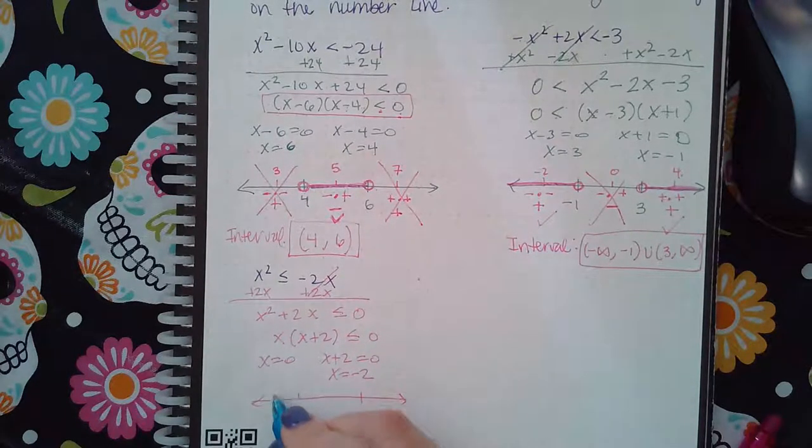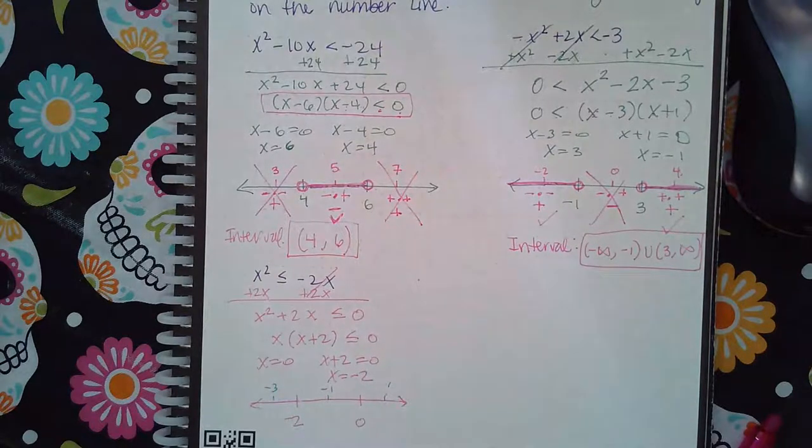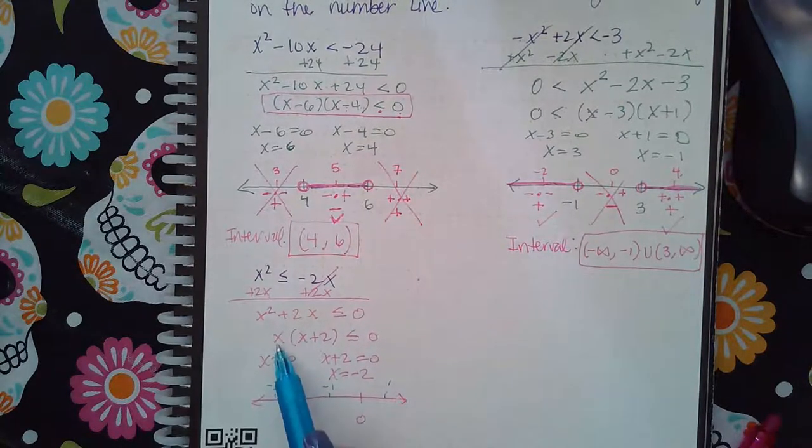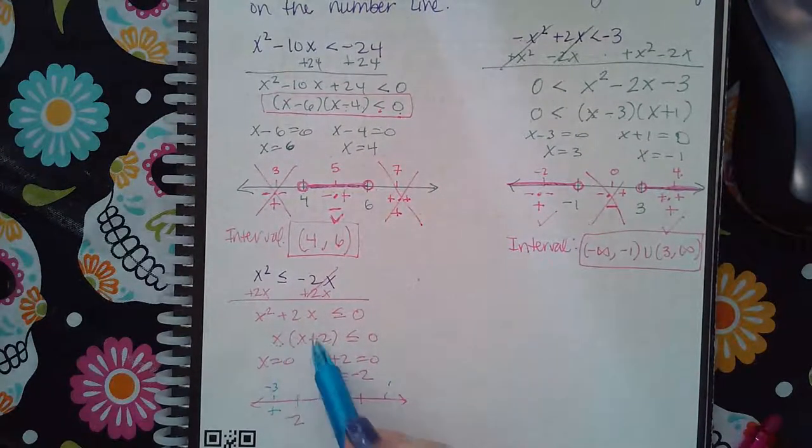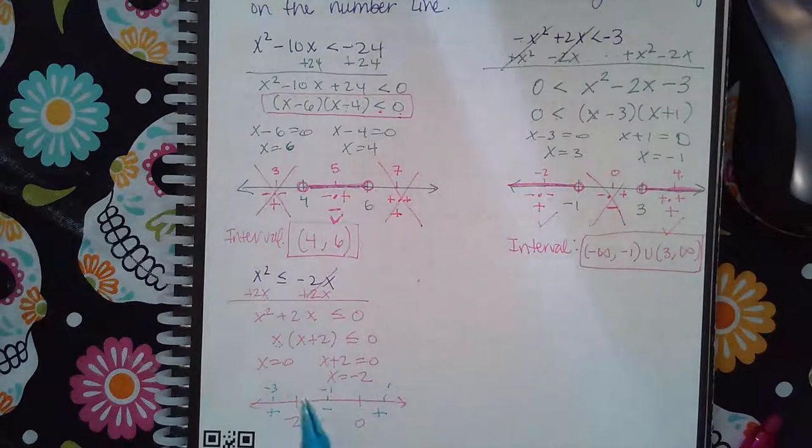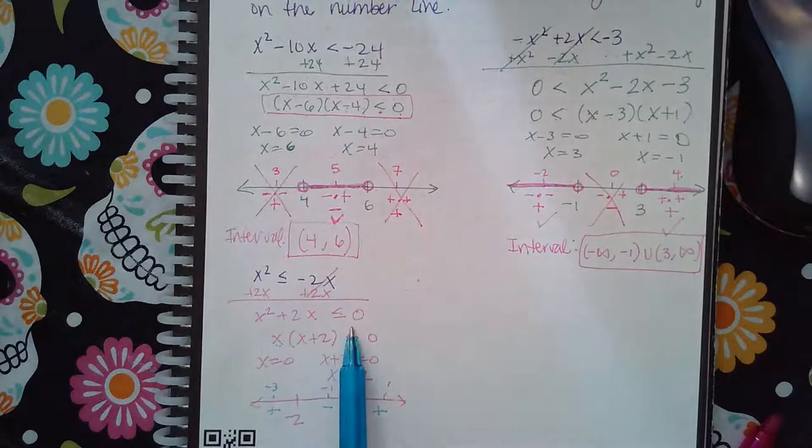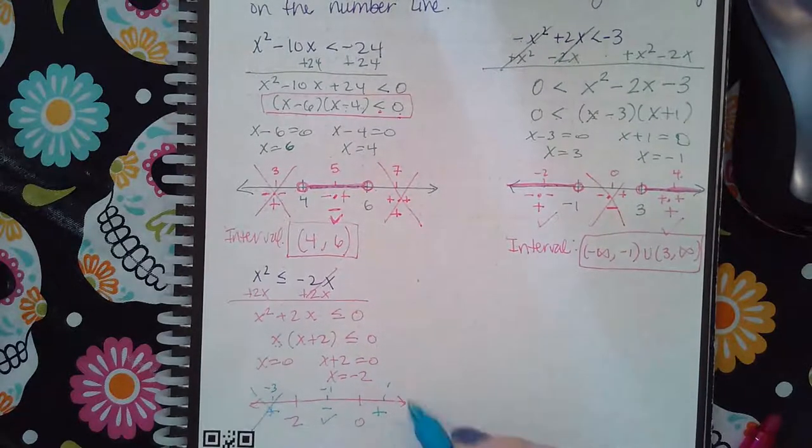So if I plug in a negative 3 and negative 1 and a positive 1, let's see what we get. So negative and a negative will be a positive, negative and a positive will be negative, positive and positive will be positive. And then you want the values that are less than zero, so it would only be this section in the middle and not these two sections.